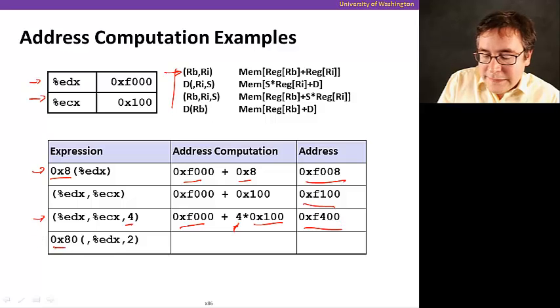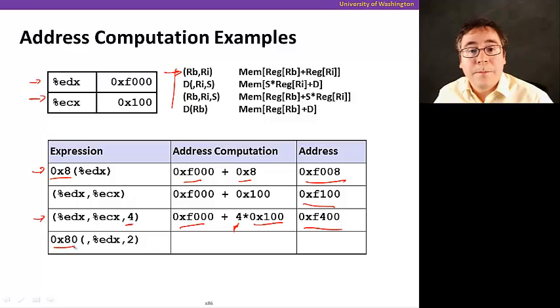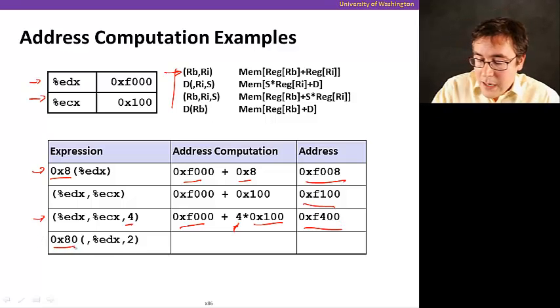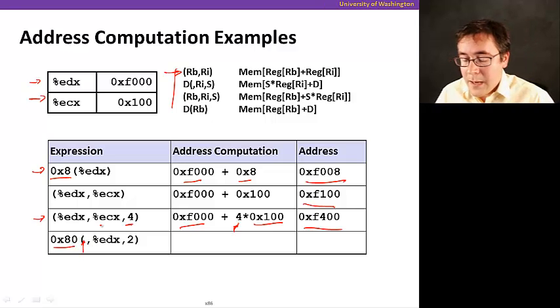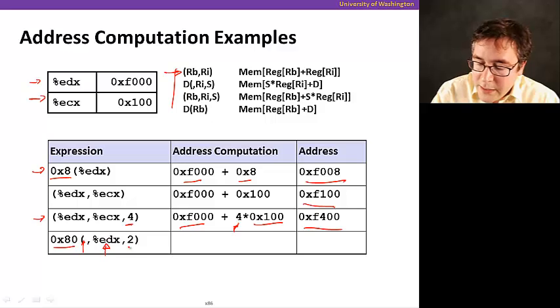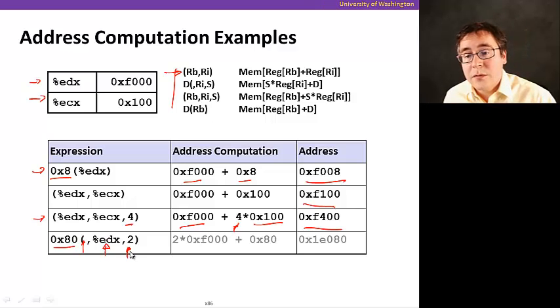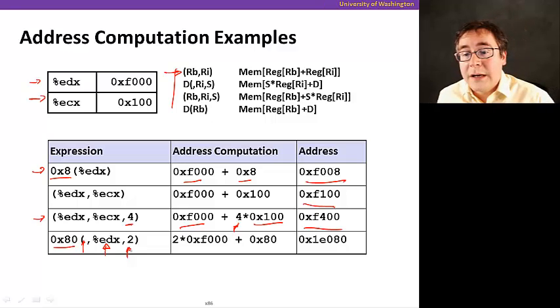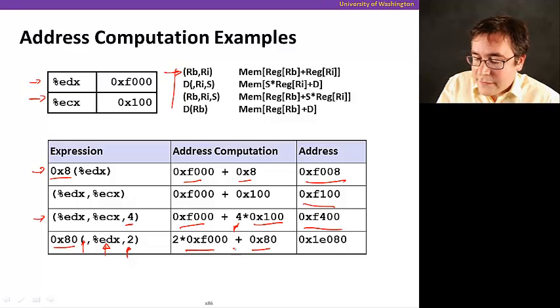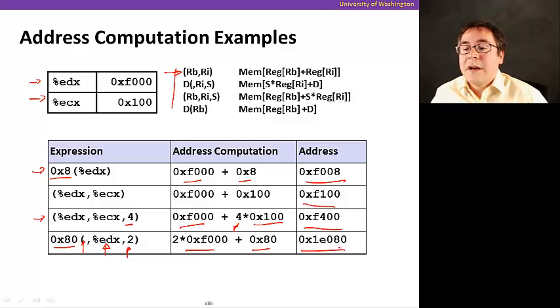So, now, the final example here is D is set to 0x80. We do not have RB, so RB is empty. But we have RI and we have a scale too. So, what is this going to do? Well, it's going to do two times the contents of EDX. That's here. Add it with the displacement, and we get the final address, 1E080.